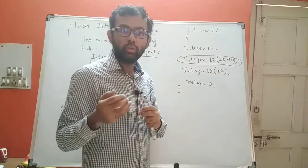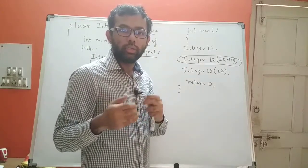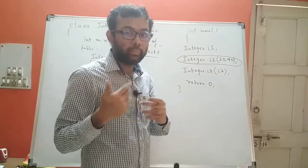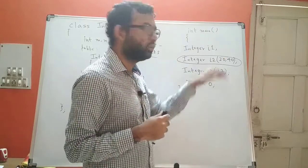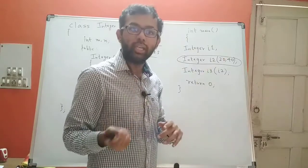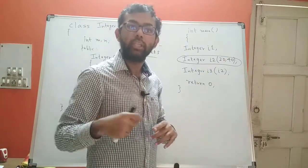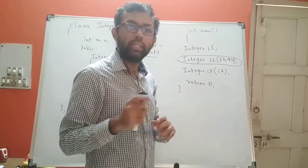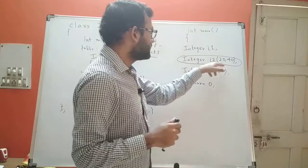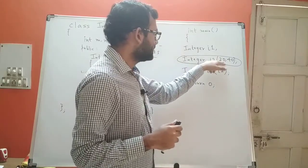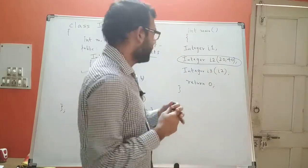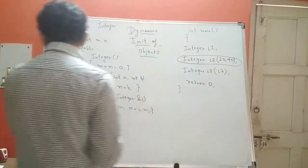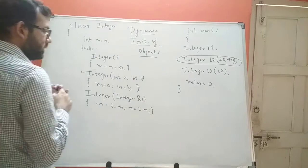Now if I want to add a dynamism to this — that means if I want the value to change as and when the user wants — then instead of passing the values 20 and 40, what I can do is I can pass variables.